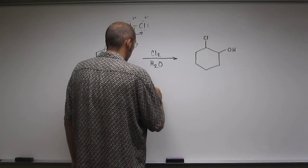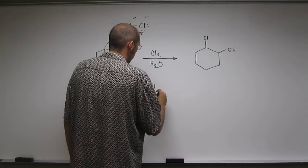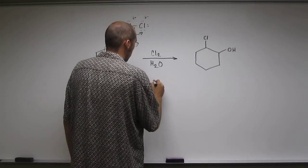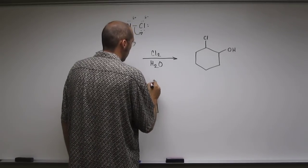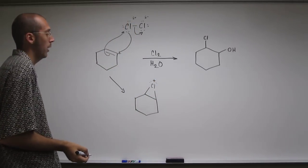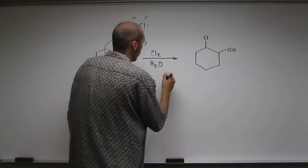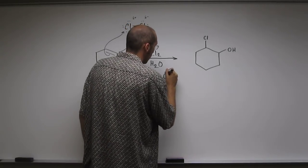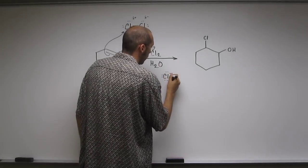And so, what are we going to get? We're going to get that chloronium ion. We're also going to get Cl minus, so the chloride ion.